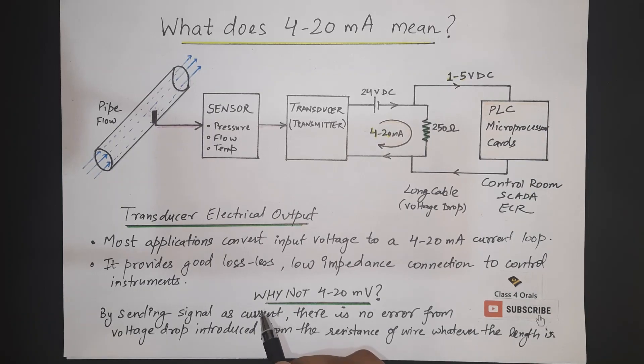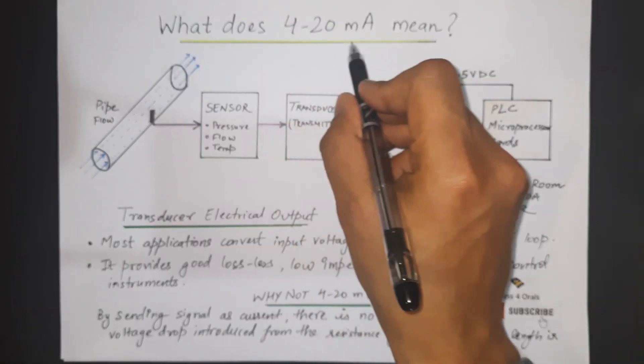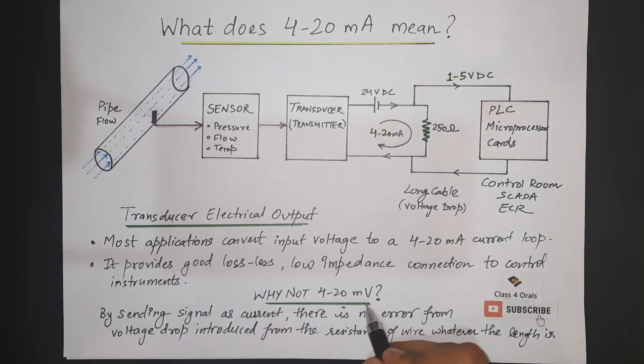Now the question arises why we are focusing only on the 4 to 20 mA and why not we are taking the 4 to 20 mV because by sending the signal as current there is no error from the voltage drop.